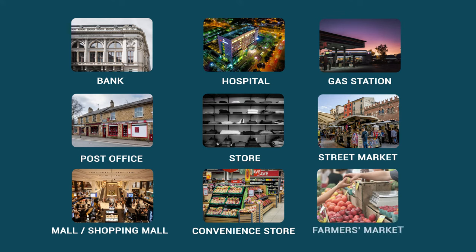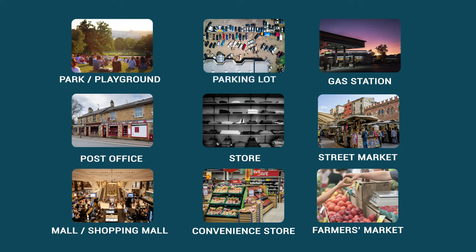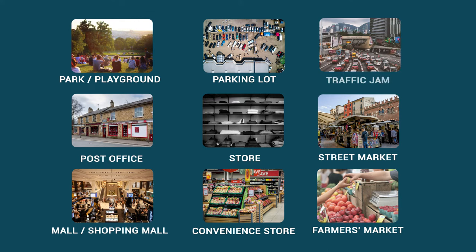Farmers market — a farmer's market is where you can buy fruits and vegetables. Park or playground — a park or playground is a place where you can take kids or pets to play. Parking lot — a parking lot is a place where you leave your car when you go shopping. Traffic jam — a traffic jam is where cars get stuck, especially during rush hours.